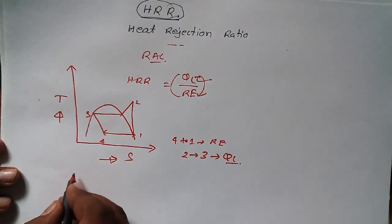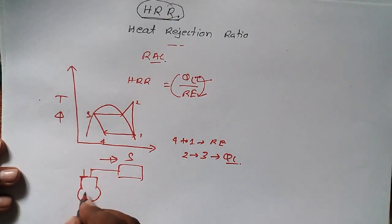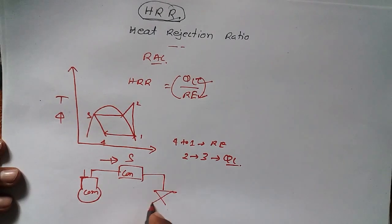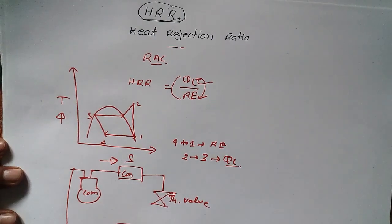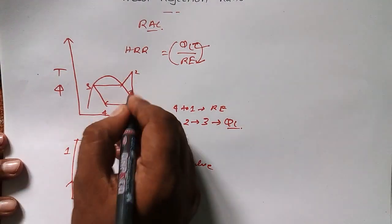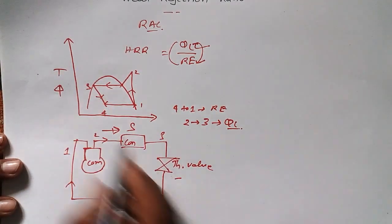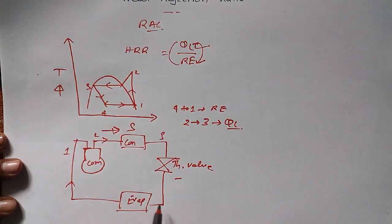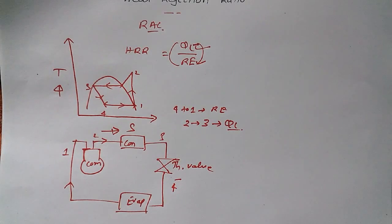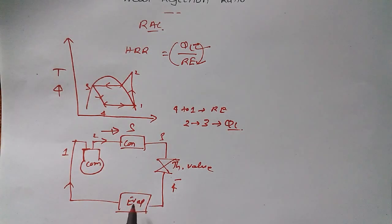Let me show the block diagram of the VCRS cycle. We have a compressor, then a condenser, then a throttle valve, and then an evaporator, with refrigerant flowing through. Process one to two is the compressor, two to three is the condenser, three to four is the throttle valve, and four to one is the evaporator.